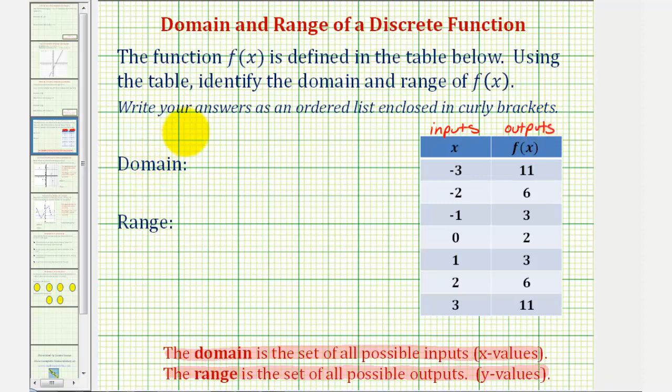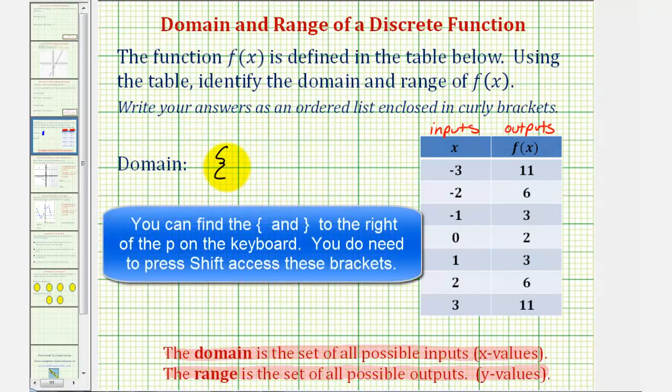So we're asked to include the domain and range in a set of curly brackets, which look like this. We do want to list the domain, or the x values, in order from least to greatest. Notice how they already are in order from least to greatest, but if they weren't, we would want to order them from least to greatest.